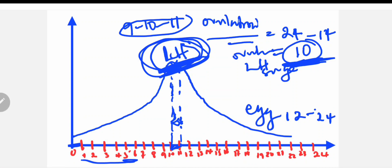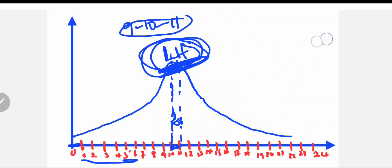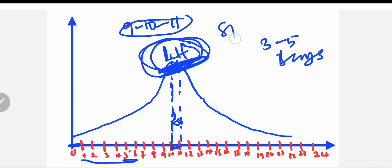Another concept to remember is that sperm is viable for three to five days. So when calculating the safe days and the fertile or unsafe days, we have to put these five days into consideration.